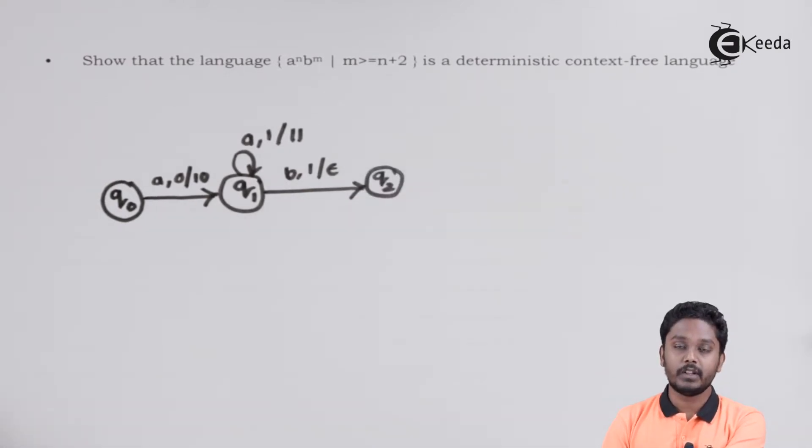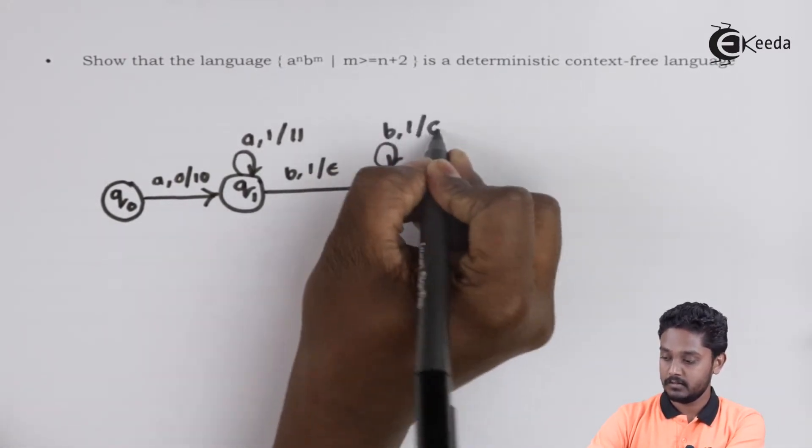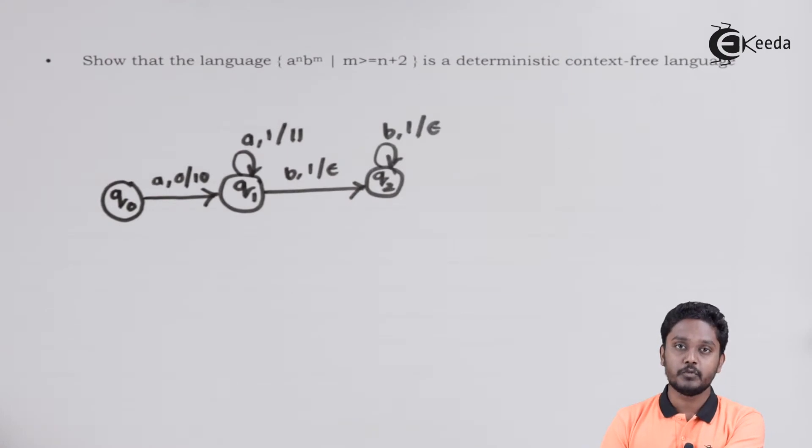At state Q2, with every B, I will have to pop 1 out of the stack. Whenever I am finished with number of 1s, it means that I have already encountered equal number of A's and B's. Now I need at least 2 extra B's.